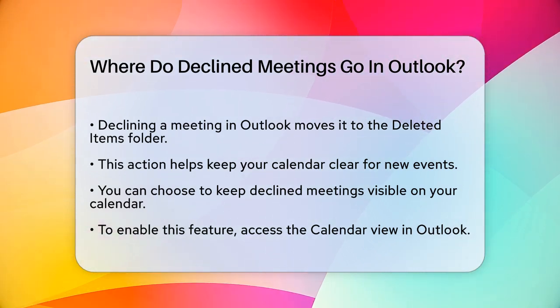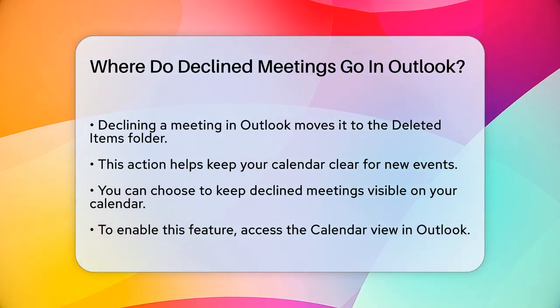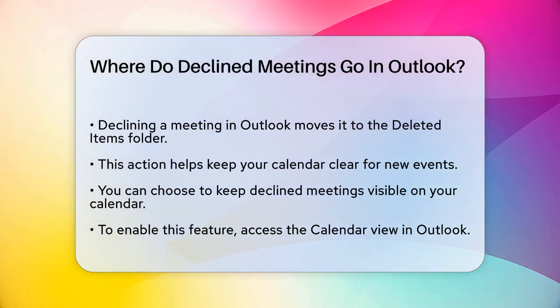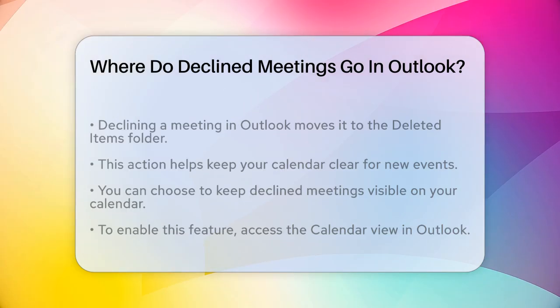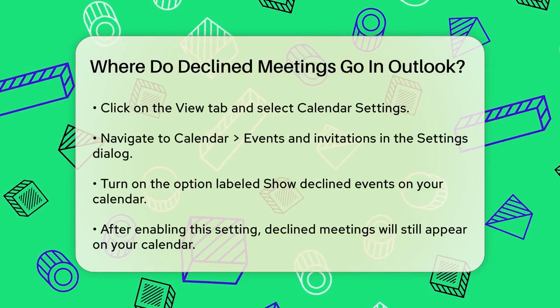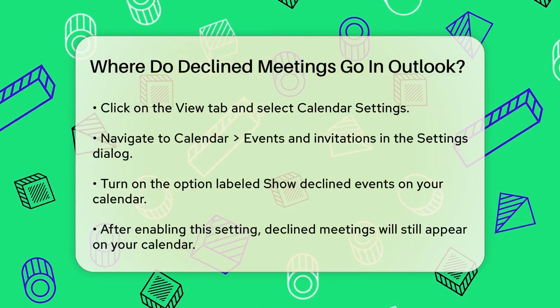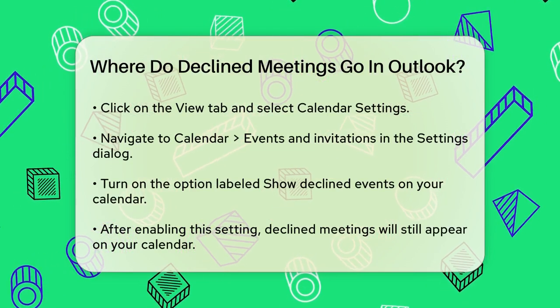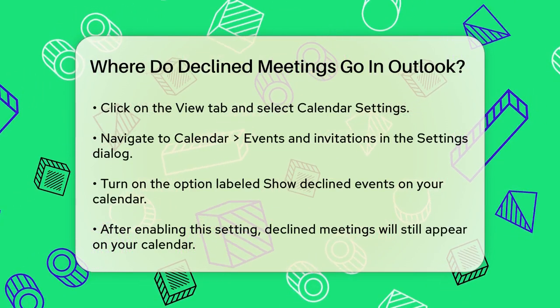However, there's a way to keep these declined meetings visible on your calendar. You can enable a specific setting in Outlook to show declined events. Here's how you do it.